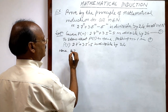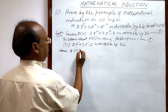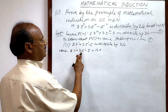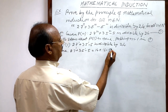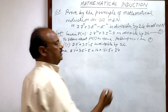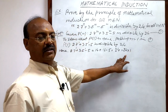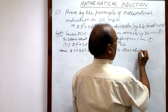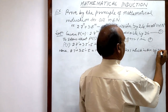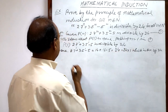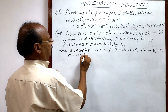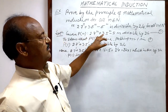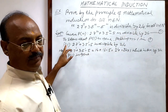Calculating: 2·7¹ + 3·5¹ - 5 = 14 + 15 - 5 = 24, which equals 24·1. Since 24 is a factor, this is divisible by 24. Therefore P(1) is true. The value of P(1) is 24, which is divisible by 24, so this statement is true for n = 1.